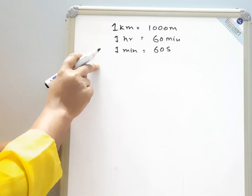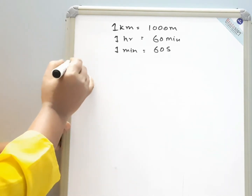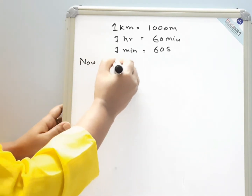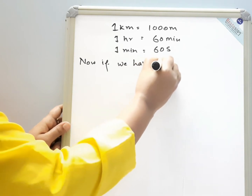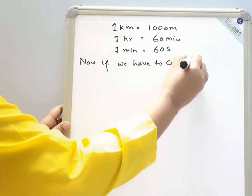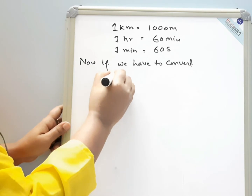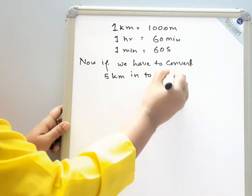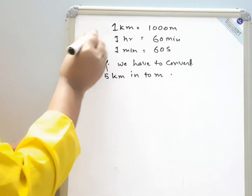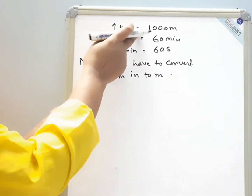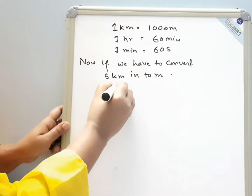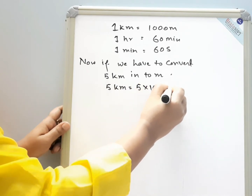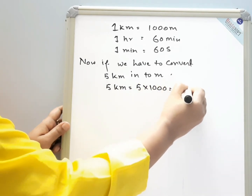We will take one example to understand this. If we have to convert 5 kilometers into meters, since we know that 1 kilometer is equal to 1000 meters, 5 kilometers will be equal to 5 into 1000, that is equal to 5000 meters.